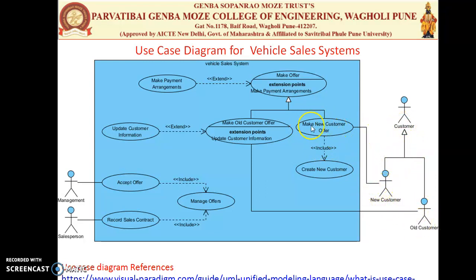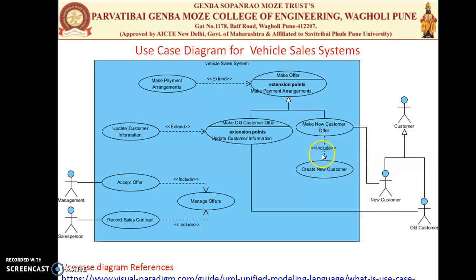For a New Customer, we can make a different offer. The diagram doesn't always have to be drawn vertically — you can also draw it horizontally depending on the use cases. If there is a new user, you can make an offer, and this will include the behavior of creating a new user. This is again the Include relationship — we are taking the functionality of creating a new user.